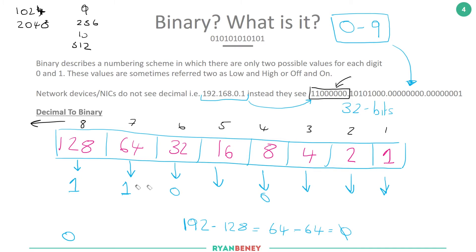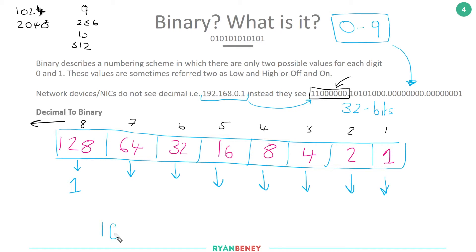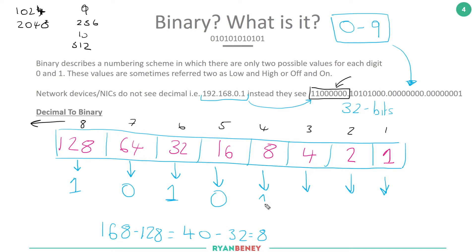For the next number, 168, we do the same. Does 128 fit into 168? Yes. Subtract 128, leaving 40. Does 64 fit into 40? No. Does 32 fit into 40? Yes — subtract 32, leaving 8. Does 16 fit into 8? No. Does 8 fit into 8? Yes — subtract 8, leaving zero, so all remaining bits are zero. The outcome is 10101000.